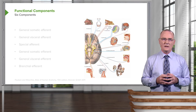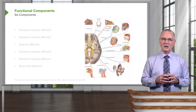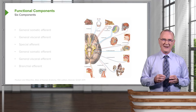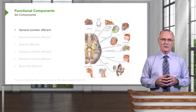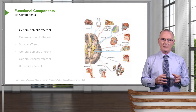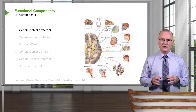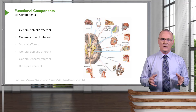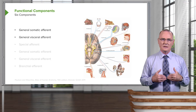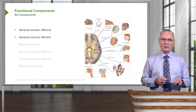When we think about cranial nerves, it's important for you to understand that cranial nerves are going to carry one or more functional components. The components that cranial nerves can convey include general somatic afferents — this is just general sensations coming from the body itself. There can also be information being relayed from the viscera, so we have general visceral afferent information being conveyed through some of the cranial nerves.